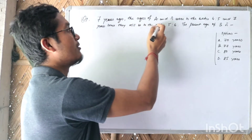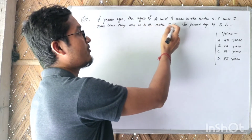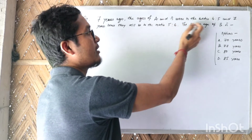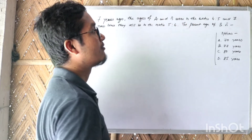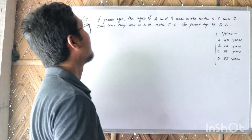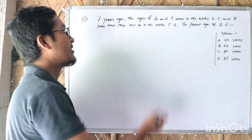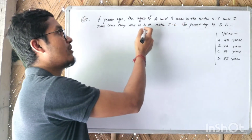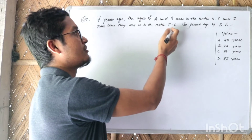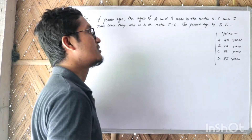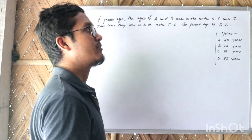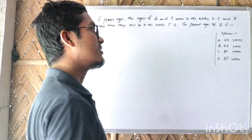Three years ago, the ages of A and B were in the ratio 4 to 5. And seven years hence, they will be in the ratio 5 to 6. Find the present age of B.